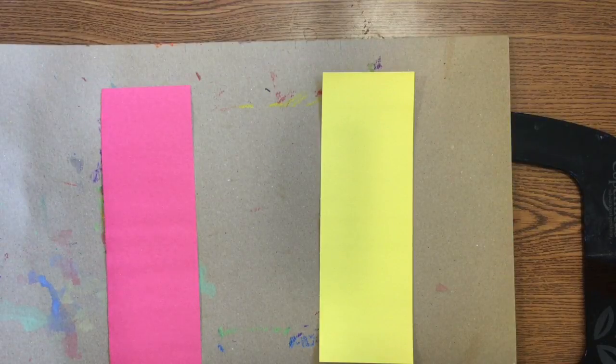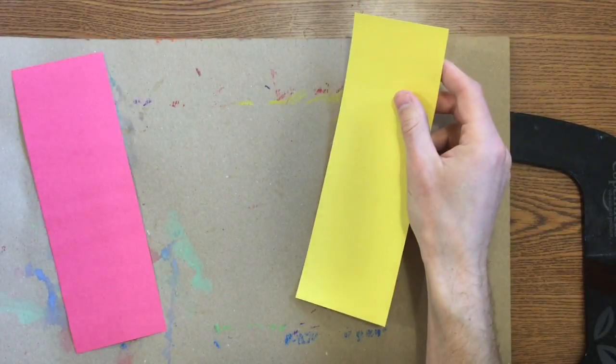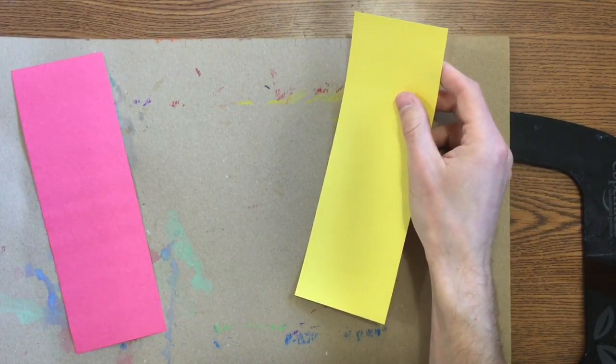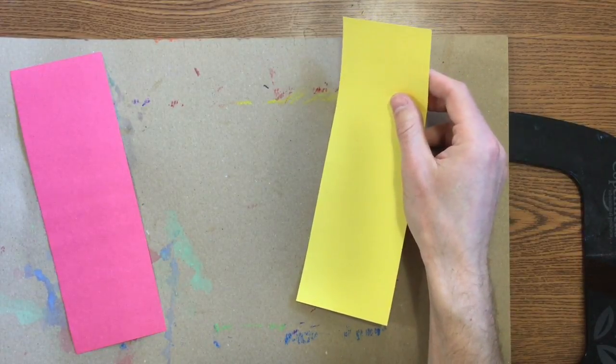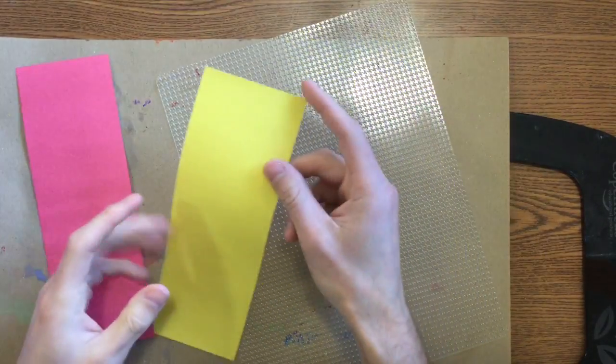We're going to be going on a little texture scavenger hunt today. You're going to pick up your strips and move around the room, trying out all the different kinds of textures. Some of them will be on the floor, some will be at tables. You're not going to be just working at your own table today.